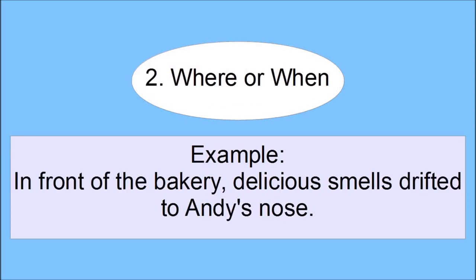The second way to start a sentence is with information about where or when it happens. An example is: in front of the bakery, delicious smells drifted to Andy's nose. Or: in the morning she went to buy bread. After the dinner they conveyed to the smoking room.